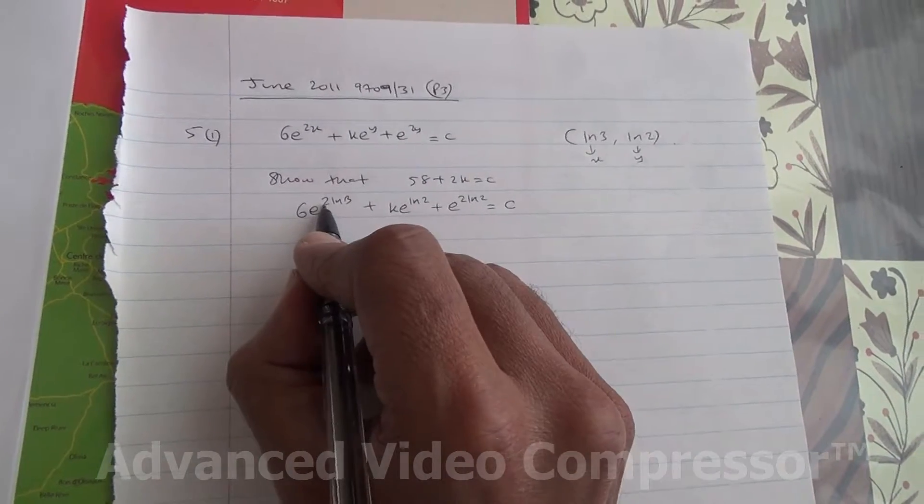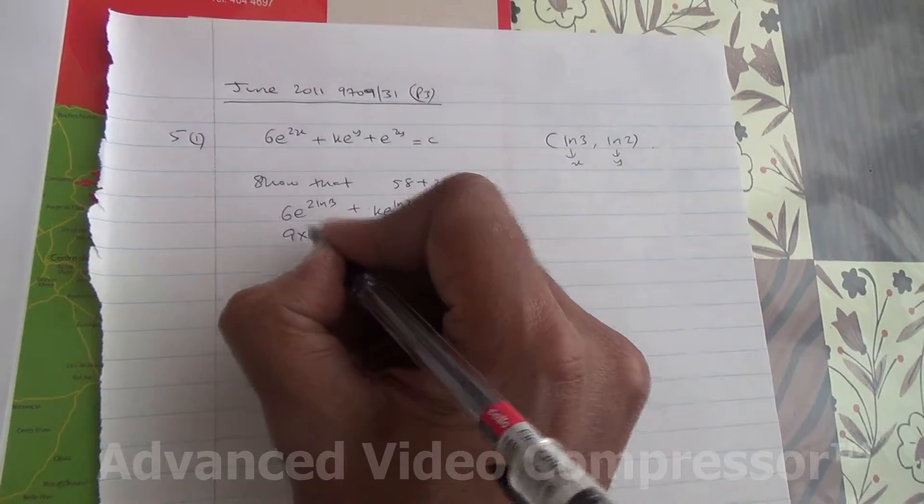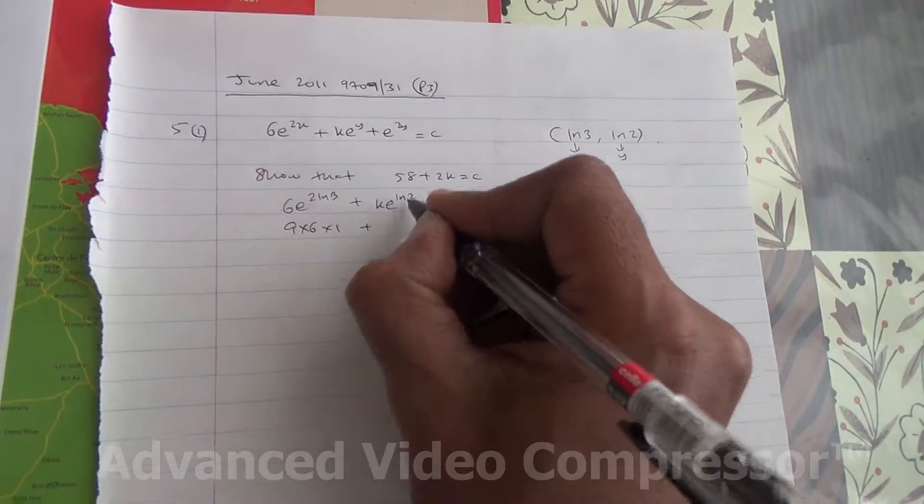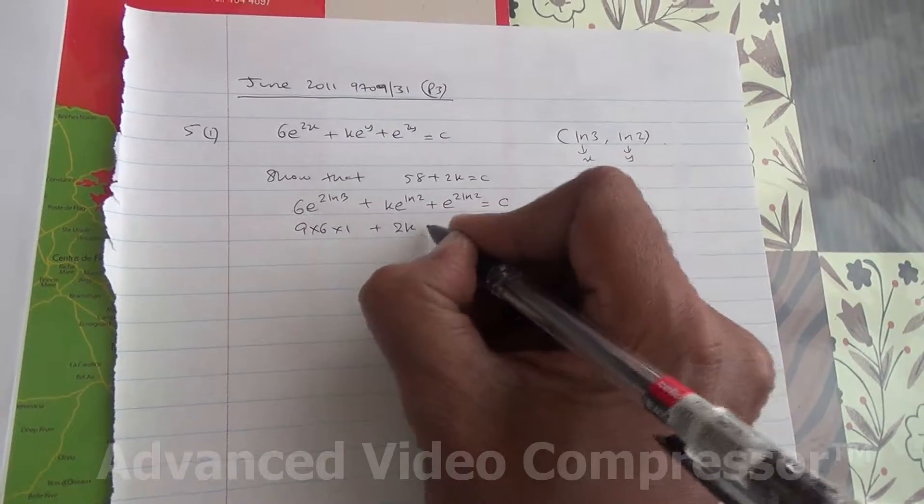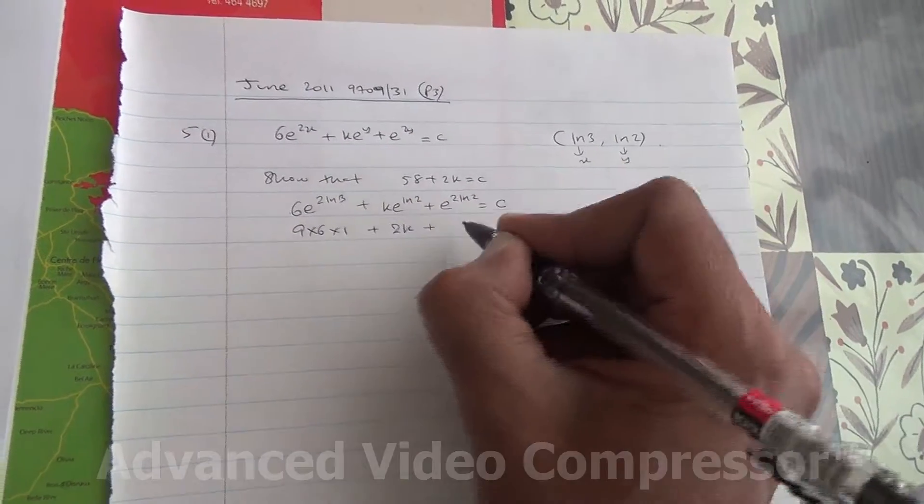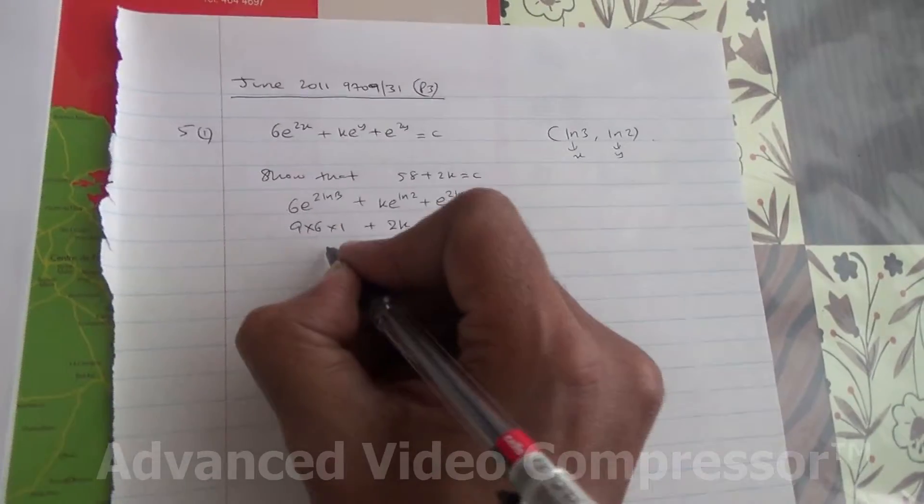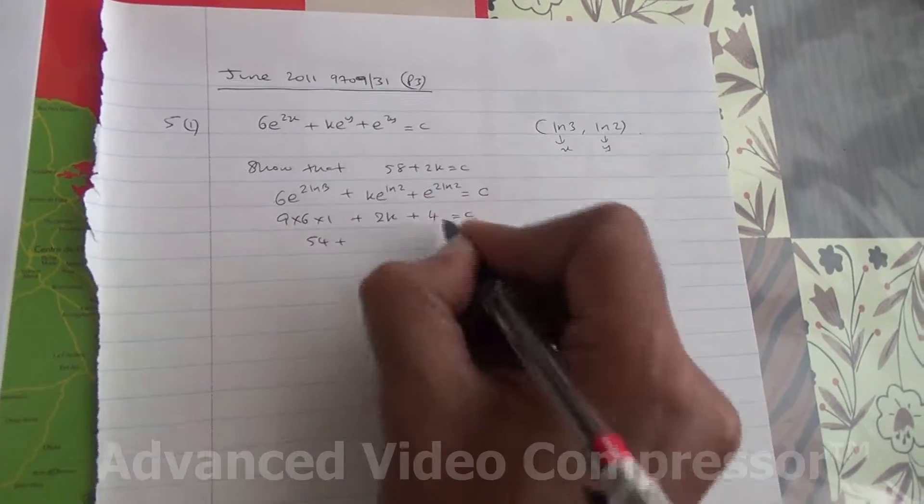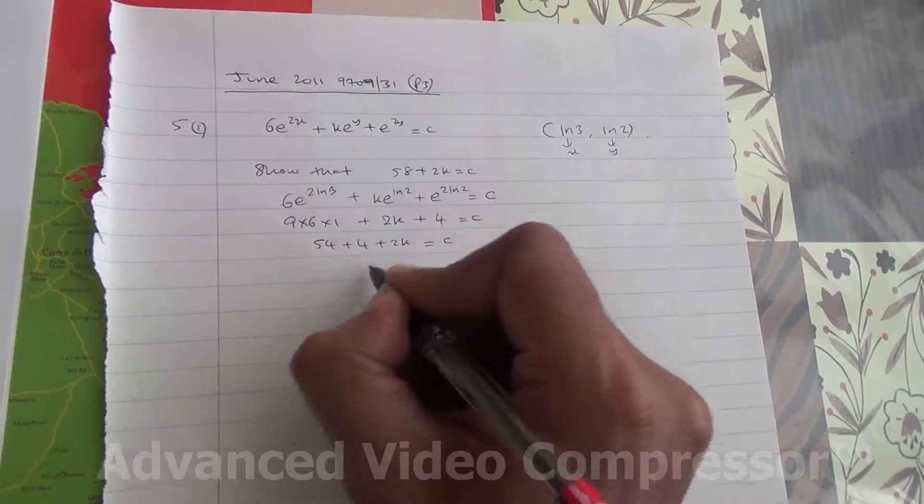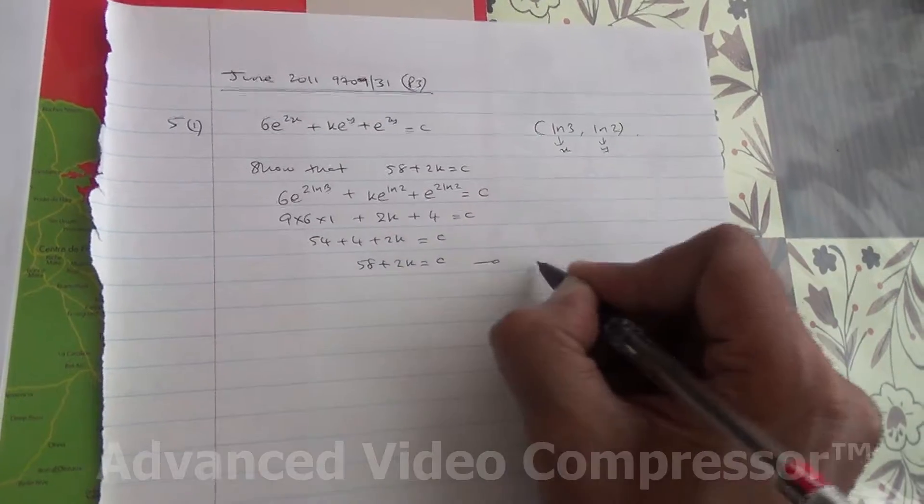So ln 3 to the square is 9, so we've got 9 times 6, ln e is 1, so times 1, plus 2k, plus 2 to the power of 2 is 4, 4 times ln e is 4, equal to c. 9 times 6 is 54, plus 4, plus 2k equal to c. That means 58 plus 2k is equal to c, shown.